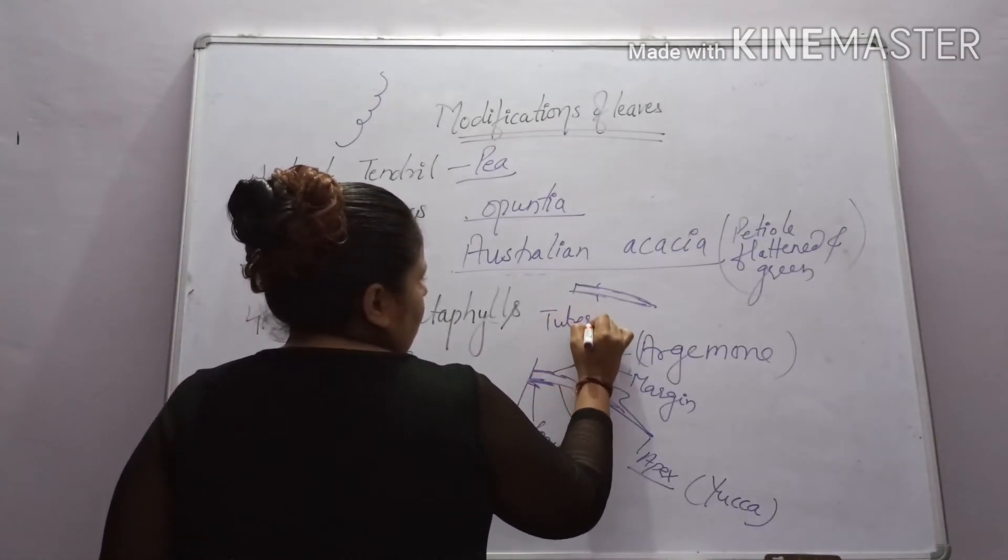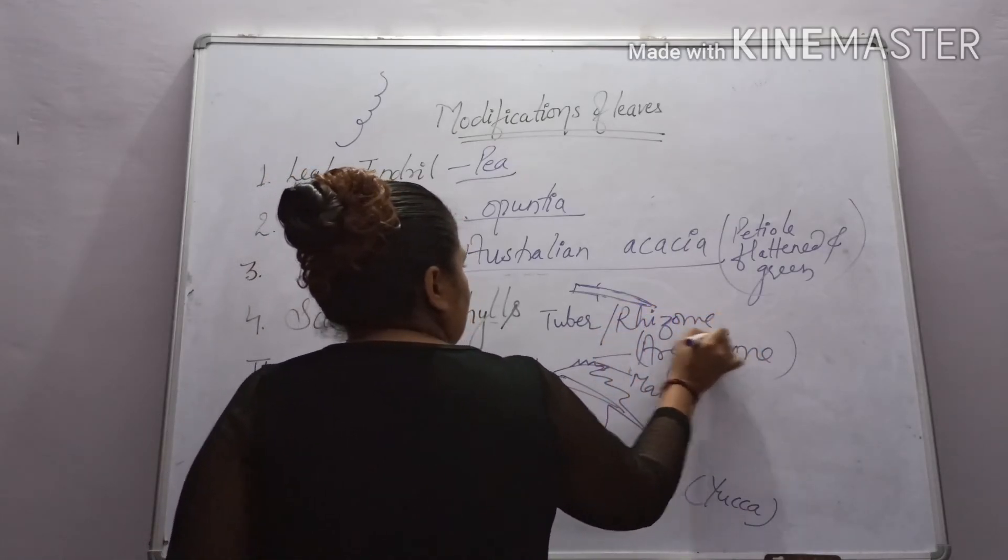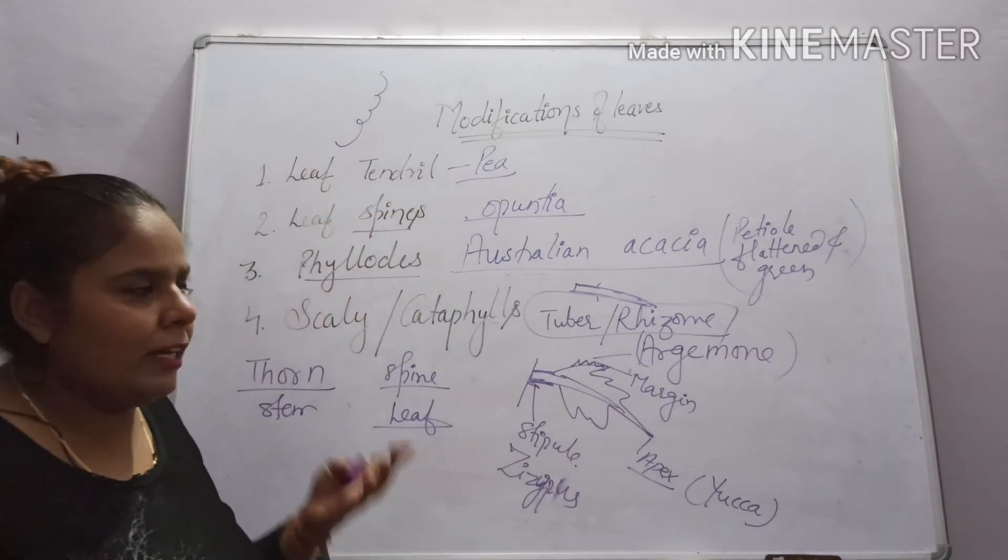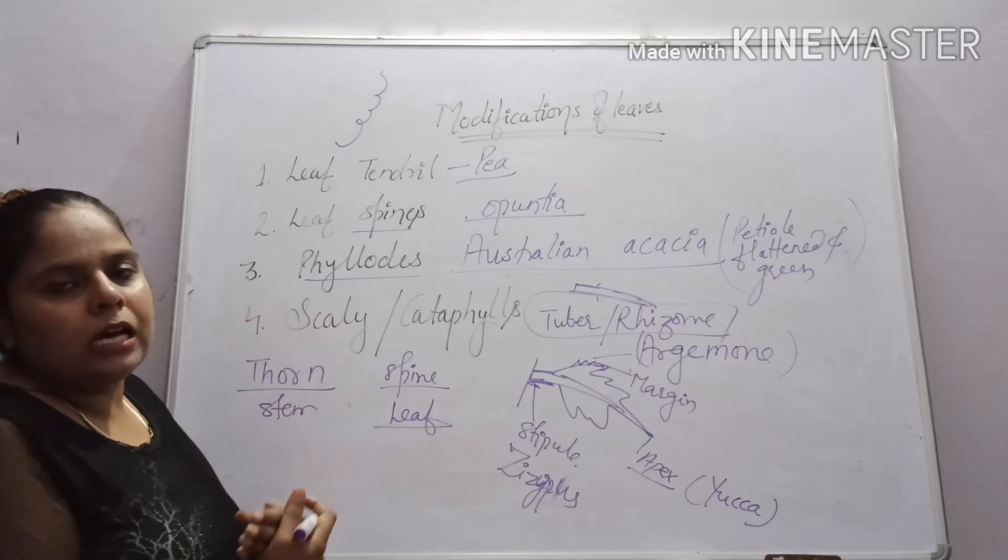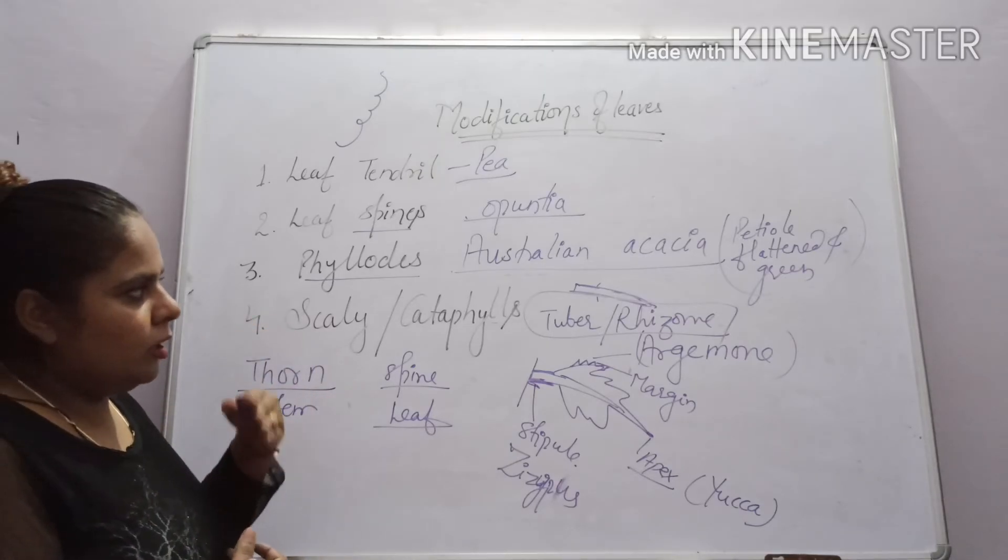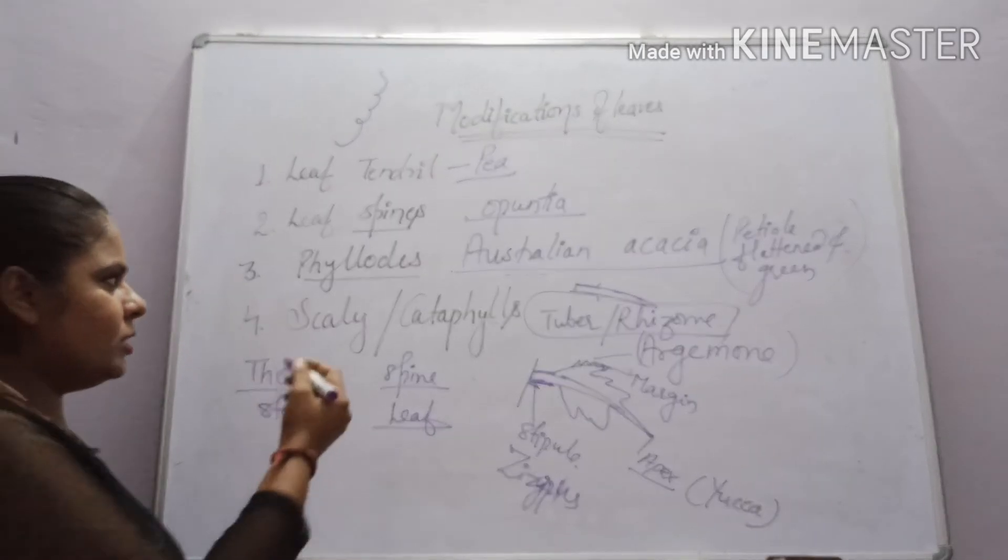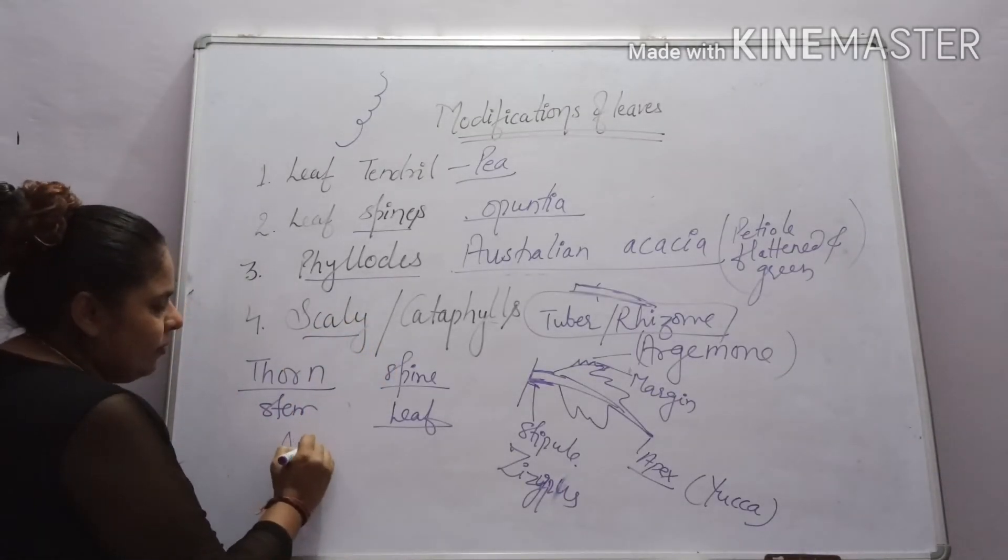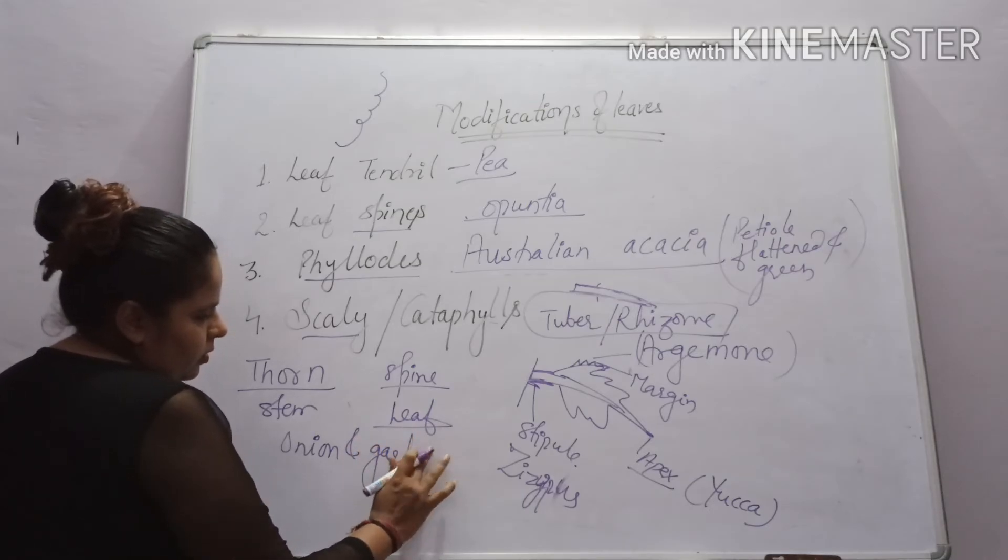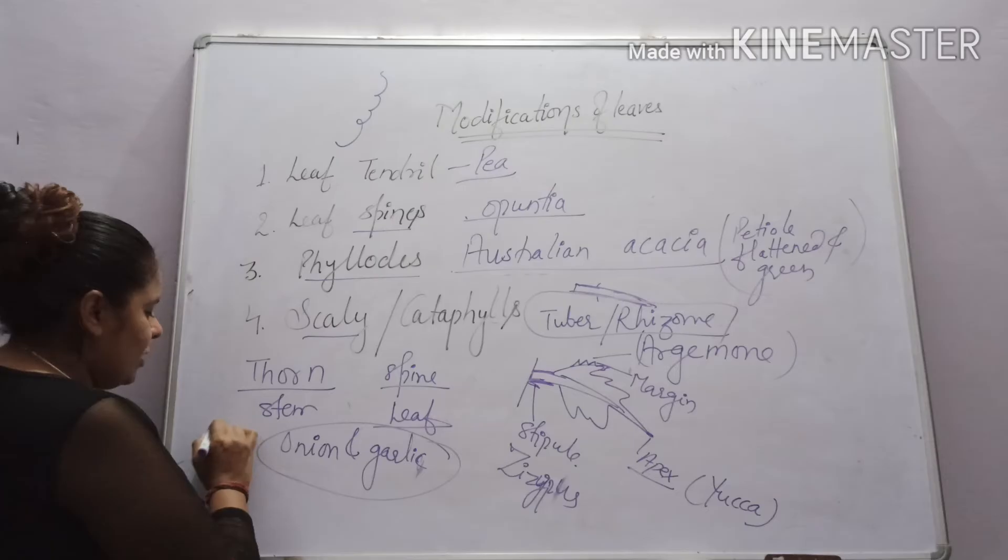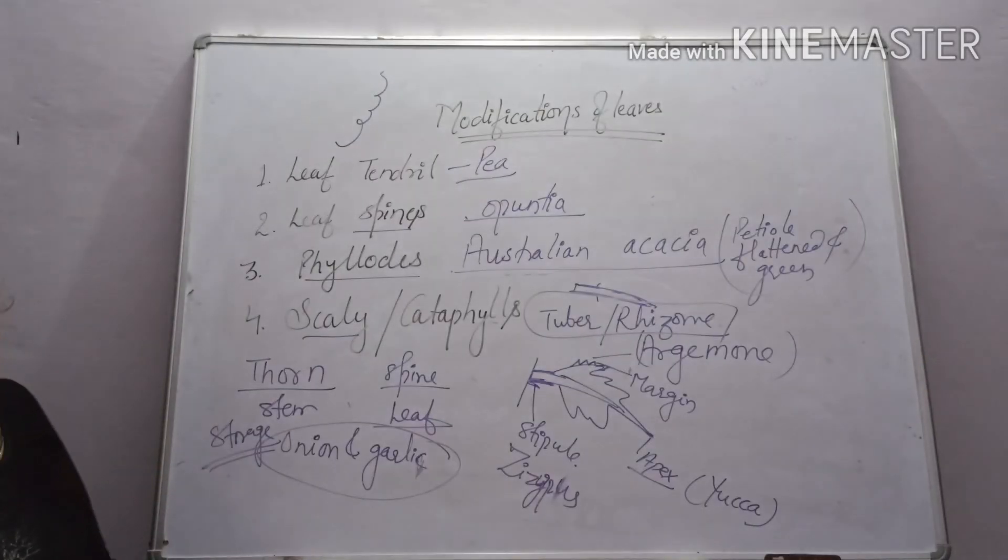Scaly leaves or cataphylls are underground, brown, like in tuber and rhizome. The leaves protect the nodes of rhizome and tuber. So these are the modifications of leaves.